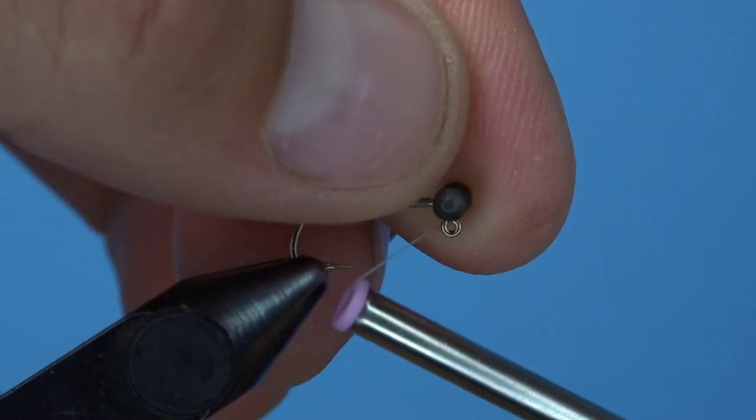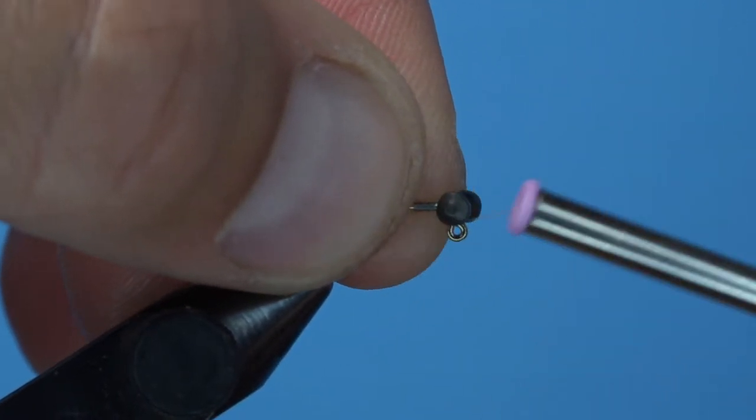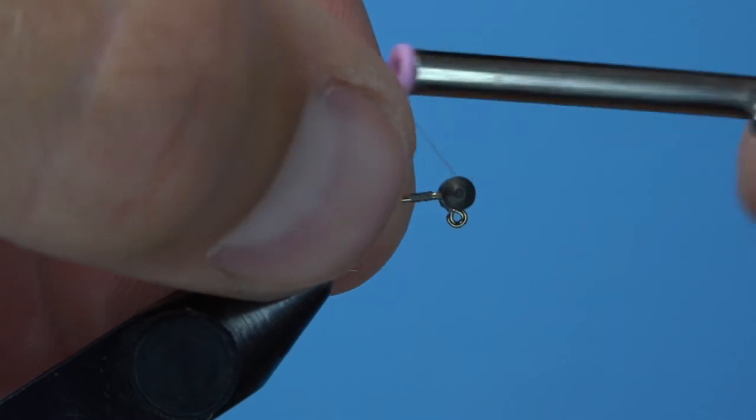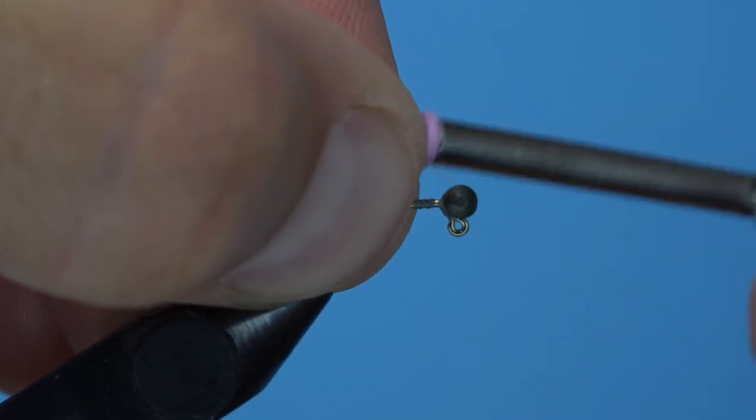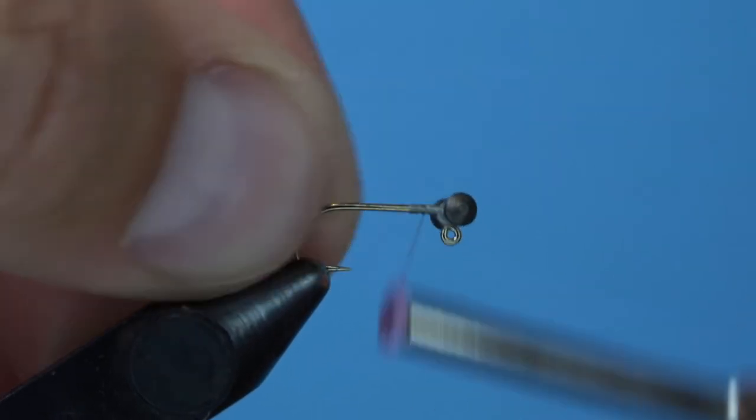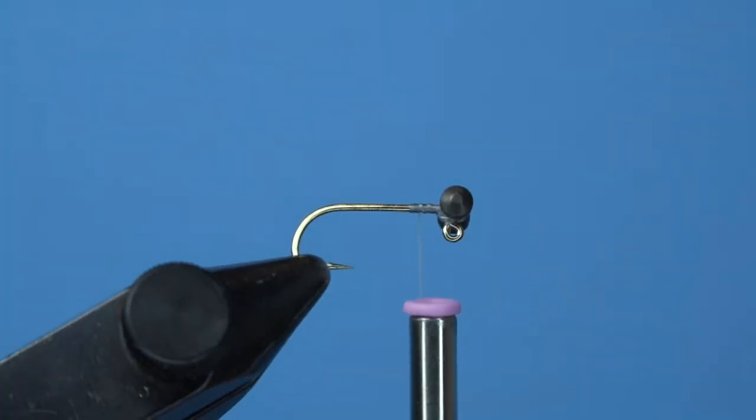Grab these eyes with a few capture wraps and make figure eights to secure them to the hook shank. Adjust the position of your eyes to make sure they're straight on the hook and make final securing wraps. Continue the thread wraps along the hook shank towards the back bend of the hook.